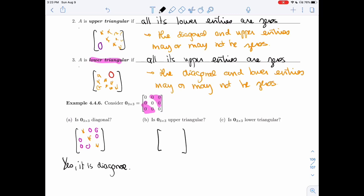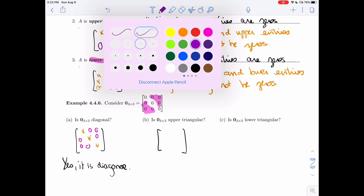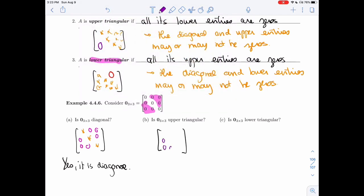All right, is it upper triangular? So upper triangular means I have the three 0s here, but everything else is free to be what it wants. So that's an upper triangular matrix. And in this case, I don't care what goes on here, but I need these three to be 0s. So yeah, it fits the definition of upper triangular because I have those three 0s.